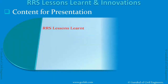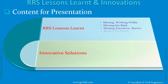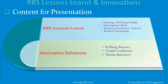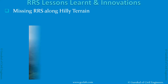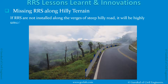In Road Restraint System lessons learned, we will discuss missing working width, missing setback, missing transition barrier, and broken terminals. We will also discuss innovative solutions like rolling barriers, crash cushions, and noise barriers. If Road Restraint Systems are not installed along the verges of a steeply graded road, it will be highly unsafe for road users.